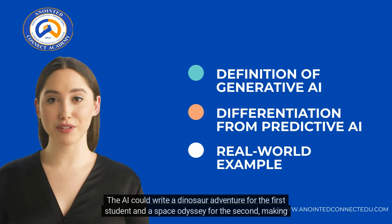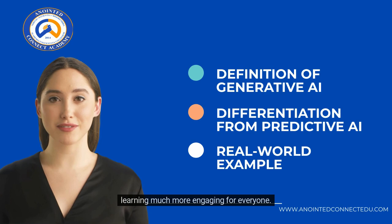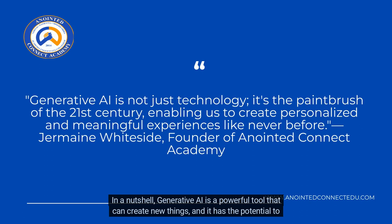Maybe one student loves dinosaurs, and another loves spaceships. The AI could write a dinosaur adventure for the first student and a space odyssey for the second, making learning much more engaging for everyone.